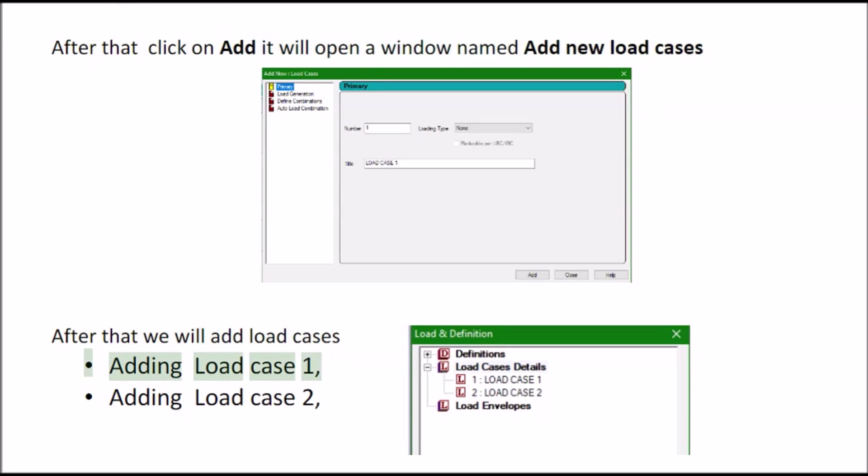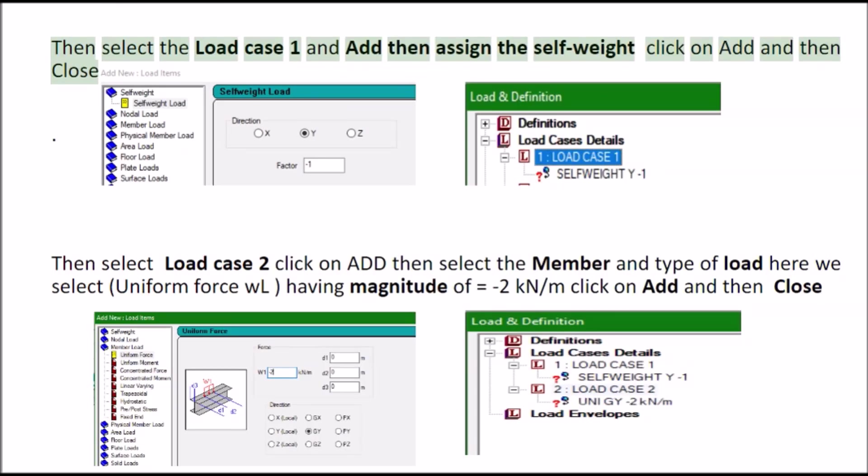Adding load case 1. Adding load case 2. Then select the load case 1 and add then assign the self weight click on add and then close.